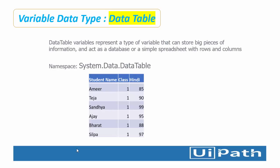First I will explain the DataTable variable, because I am going to use it with Read Range and Write Range. The definition: a DataTable variable represents a type of variable that can store big pieces of information and acts as a database or a simple spreadsheet with rows and columns. If I want to store any kind of information, the DataTable is the variable type I will use.